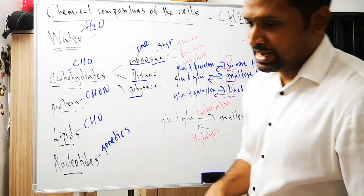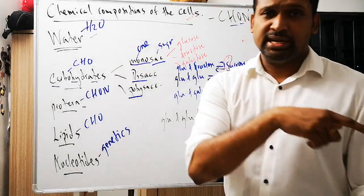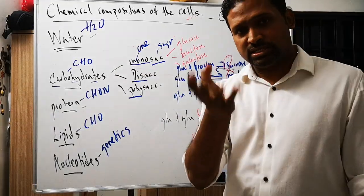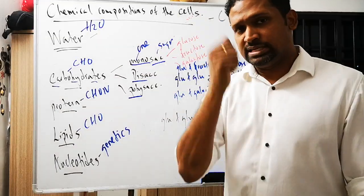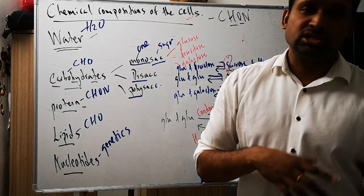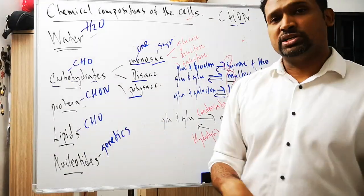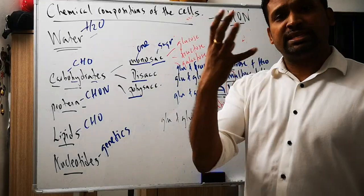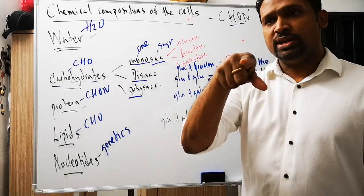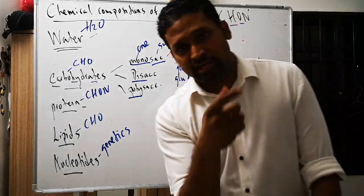Polysaccharides include glycogen, which is present in our liver; starch, found in rice and bread; and cellulose, found in cell walls. One unique characteristic of polysaccharides is that they do not taste sweet.